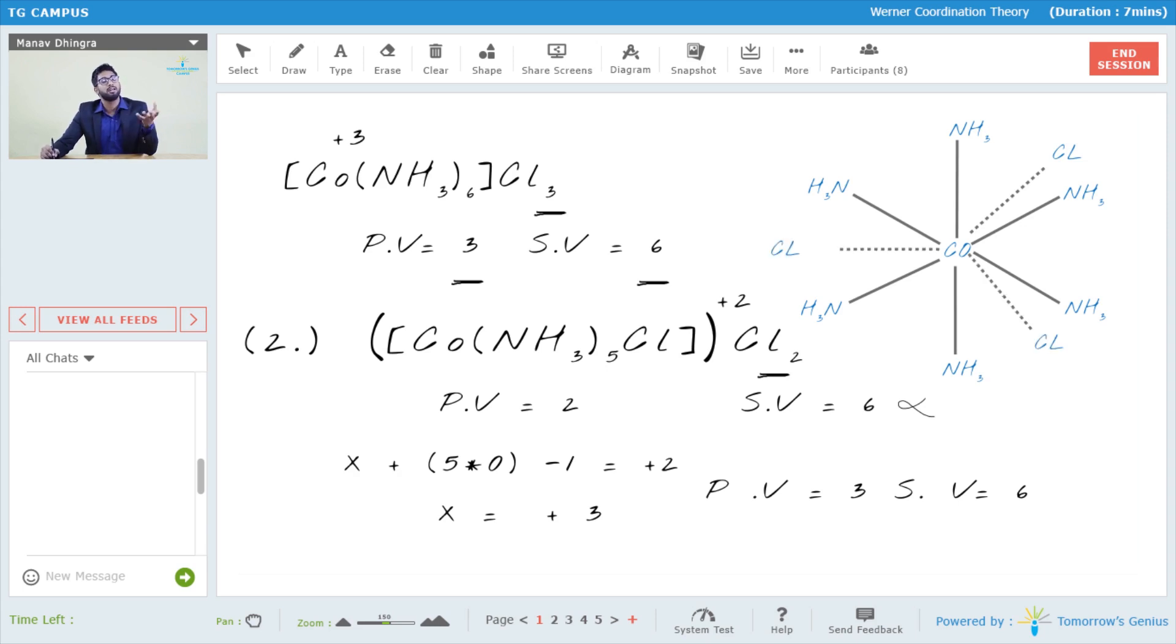You can show the primary valency anywhere - we can write it anywhere, we can show it by the dotted line anywhere you want to. Now how will we represent the structure of the second molecule?